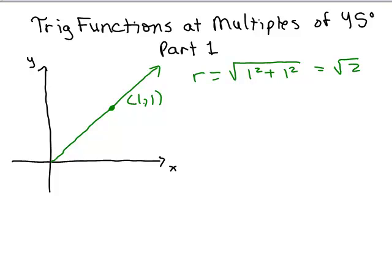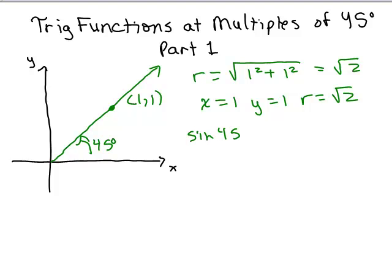For this ordered pair on the terminal side of the 45 degree angle, X is 1, Y is 1, and R is square root of 2. The sine of 45 degrees is Y over R, so it's 1 over square root of 2. Multiplying numerator and denominator by square root of 2, that's the same thing as square root of 2 over 2.